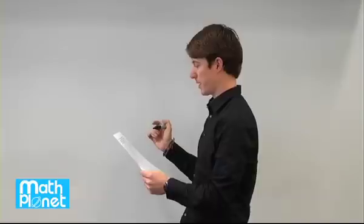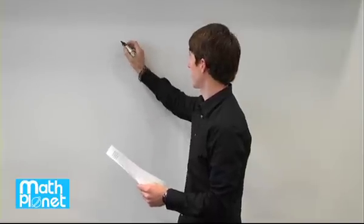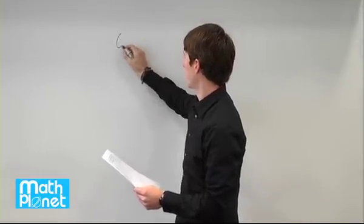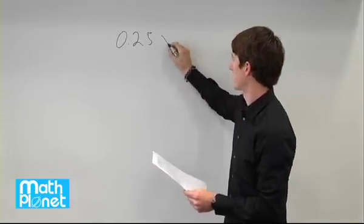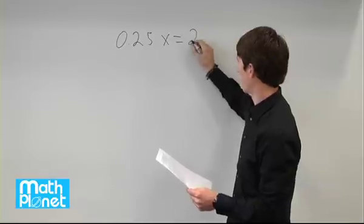So if there are 20 pigs, we can make an equation to find the total number. We can say 0.25 or 25% times our total is equal to 20 pigs.